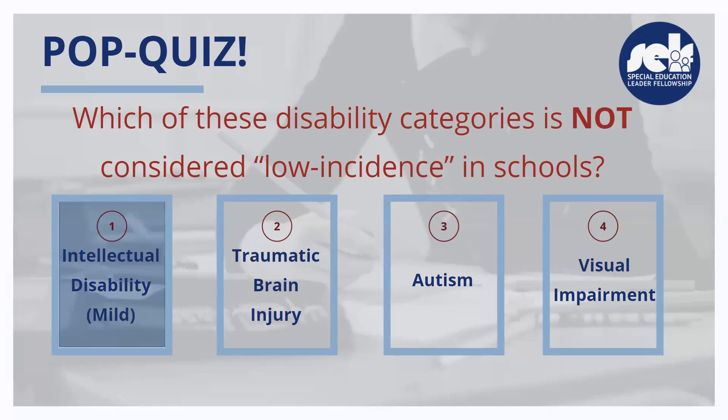If you chose number one, intellectual disability mild, you would be correct. Intellectual disability mild is considered a high incidence disability in schools. The criteria for high and low incidence is typically does it occur in 0.5 to 1% of the student population. If it occurs in that low of a percentage it's considered low incidence; if it occurs higher it's generally considered high incidence.